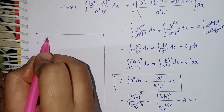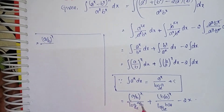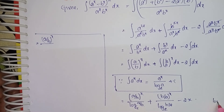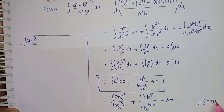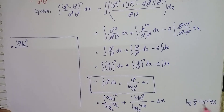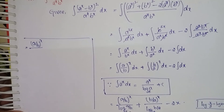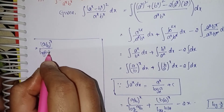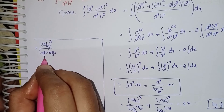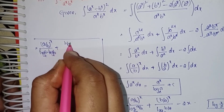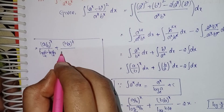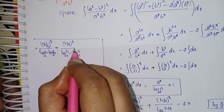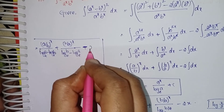Now apply the log formula: log(x/y) = log x minus log y. So log(a/b) base e becomes log a base e minus log b base e, and log(b/a) base e becomes log b base e minus log a base e.